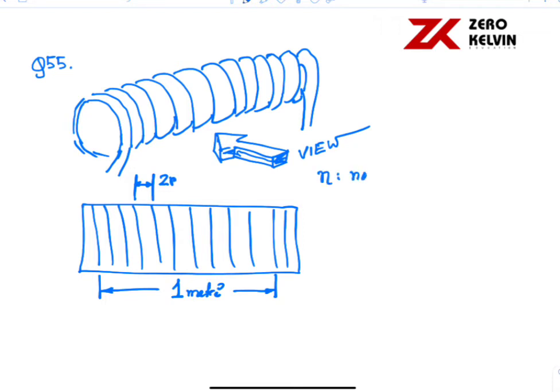the number of turns in unit length, that is 1 meter, is equal to 1 meter divided by 2R. So N equals 1 by 2R.